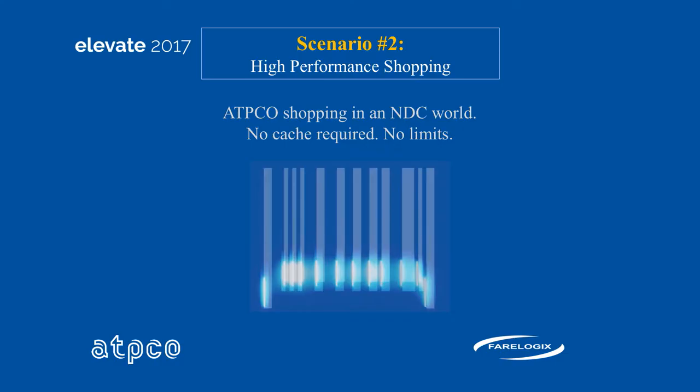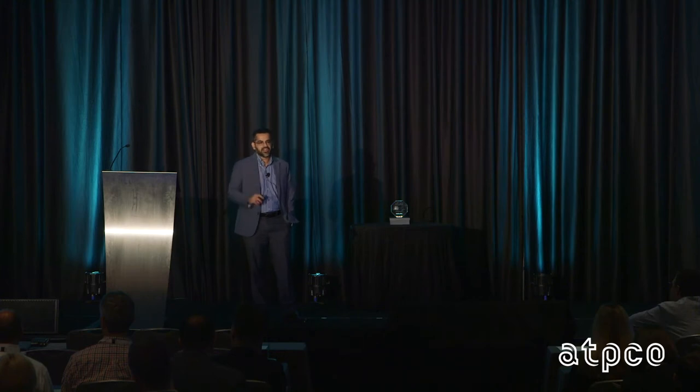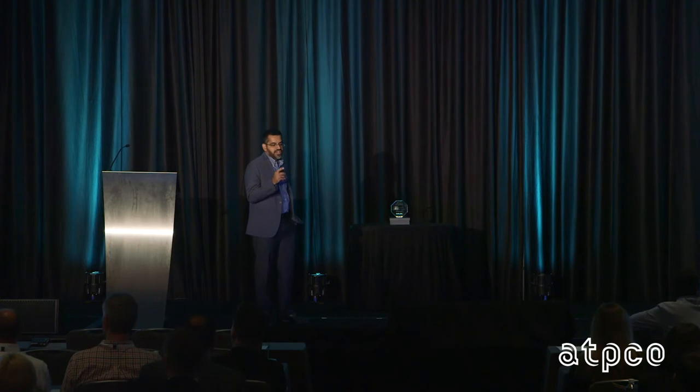Scenario number two: we all know how important it is to have response times fast — in milliseconds, with no cache. We're doing all the ATPCO processing, all that complexity of fares and rules. We're showing a shopping request from Calgary to Toronto — no cache — and the system is processing all the fares filed for that market and their associated rules, returning responses in 52 milliseconds. The engine is indeed fast.